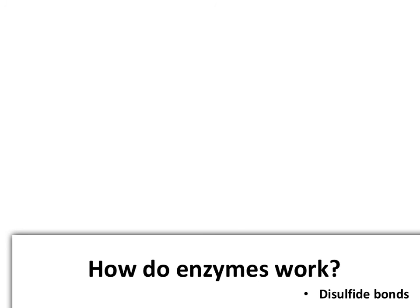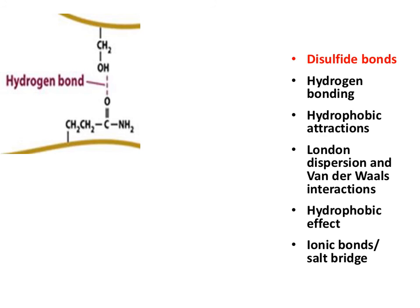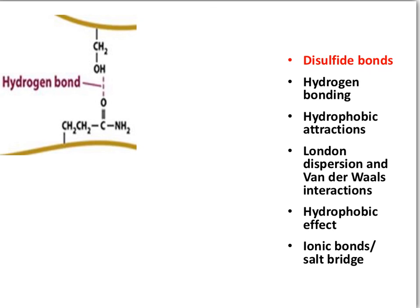To understand how enzymes lower the energy of the transition state, we need to have a clear understanding of the non-covalent interactions that were used in the formation of the tertiary structure and the quaternary structure of proteins. That includes hydrogen bonds between substrates and the active sites.